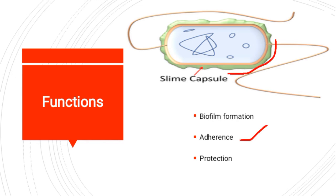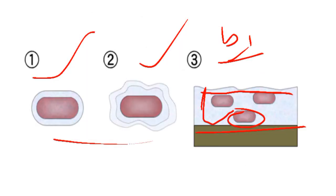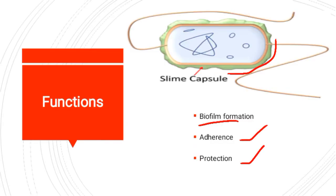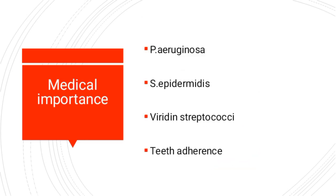Function number two is adherence. The slime layer acts as a glue and helps the bacteria adhere to surfaces. Function number three is protection. The biofilm protects the bacteria from host defenses — for example, neutrophils and antibodies — as well as from antibiotics. For example, an antibody may want to attack the bacteria, but the biofilm protects it. Hence, the slime layer protects the bacteria from host defenses and antibiotics.